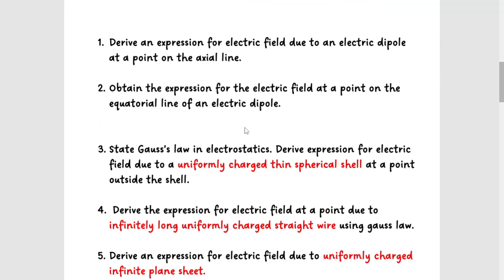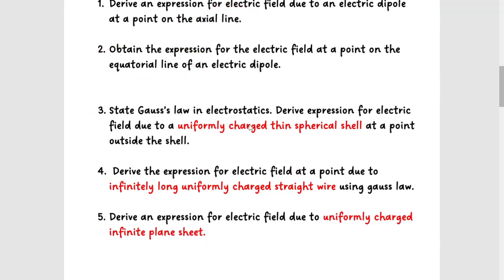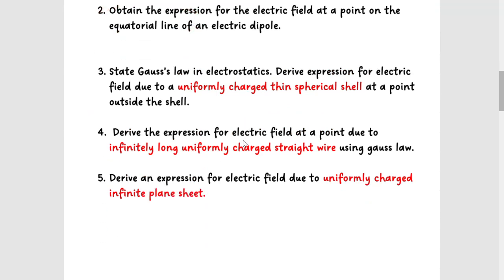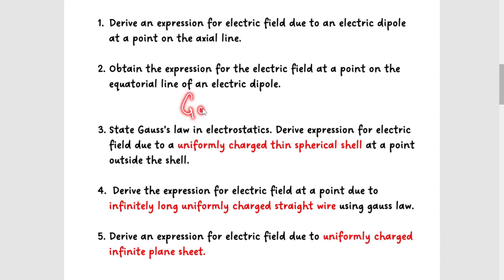First, electric charges and field. These are the high-priority derivations: the axial line and the equatorial line. Under Gauss's law, there are three derivations — the thin spherical shell, the infinitely long uniformly charged straight wire, and the uniformly charged plane sheet. So that makes five derivations for this chapter: two from dipole (axial and equatorial line) and three from Gauss's law.